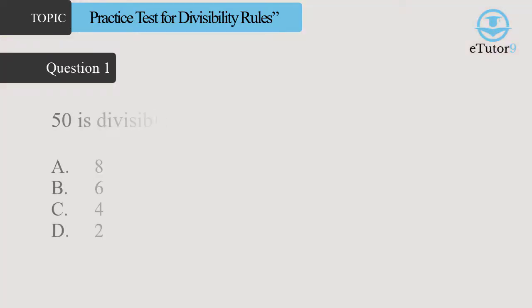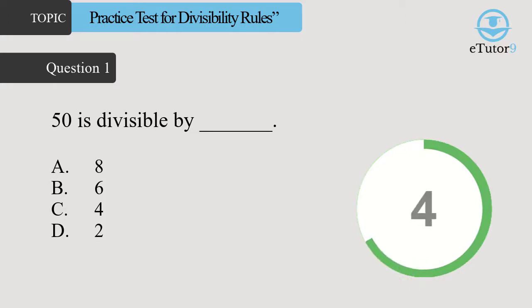Question 1: 50 is divisible by dash. Answer is D, 2.